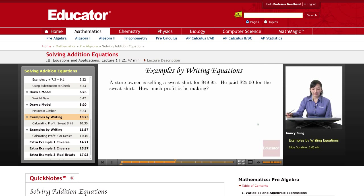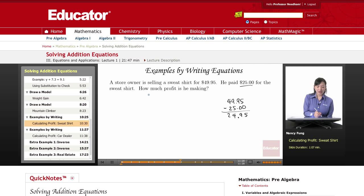Let's try some examples by writing equations without drawing the model. A store owner is selling a sweatshirt for $49.95. He paid $25 for the sweatshirt. How much profit is he making? Let's take $49.95, the total price that the sweatshirt costs, and let's subtract how much he had to pay for it to find out how much he'll be making. 9 minus 5 is 4, and 4 minus 2 is 2. So he's going to be making $24.95. So he's almost doubled the price of the sweatshirt here. He paid $25 and he's going to be making an extra $24.95 on the sweatshirt. He's making $24.95.